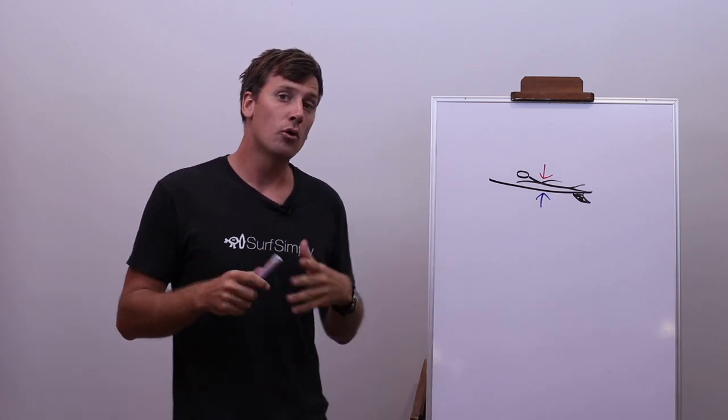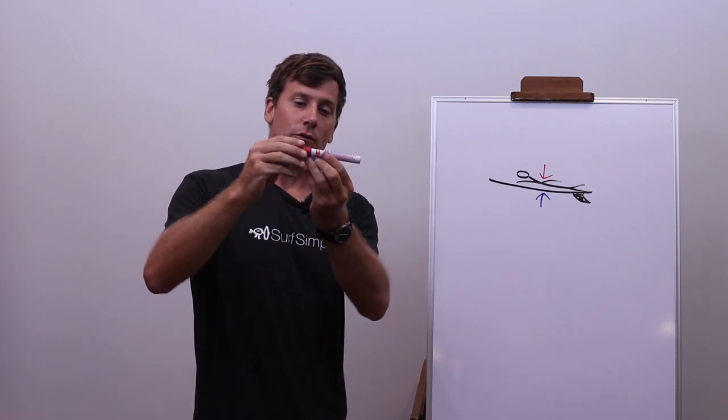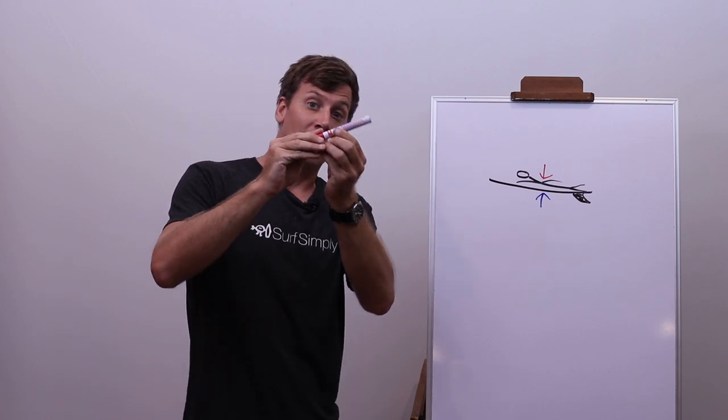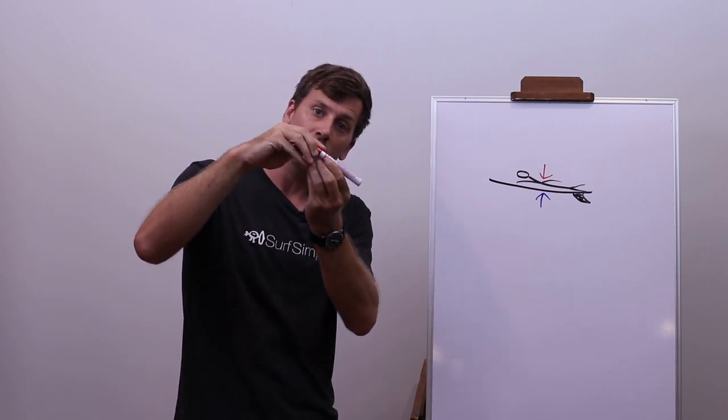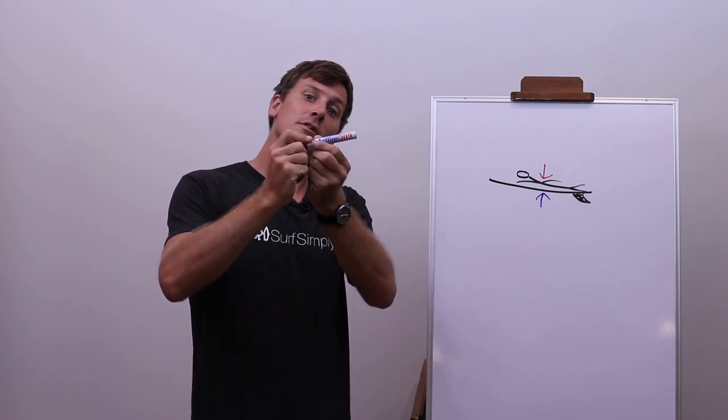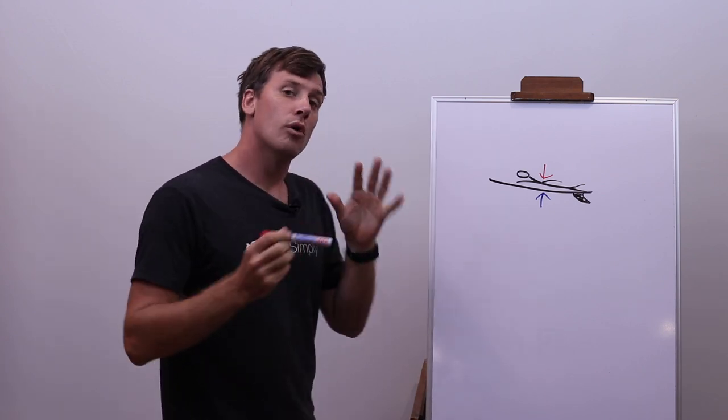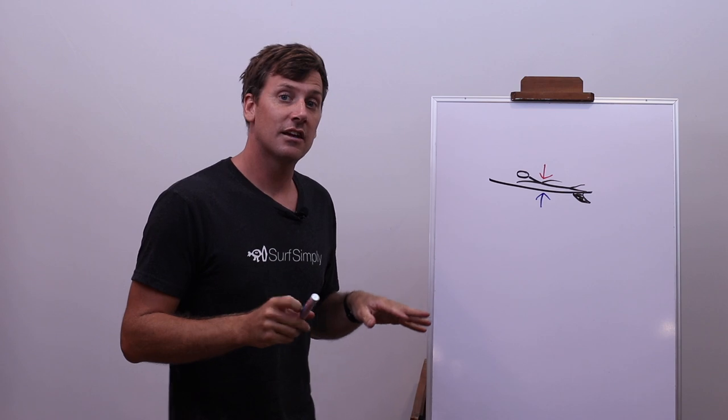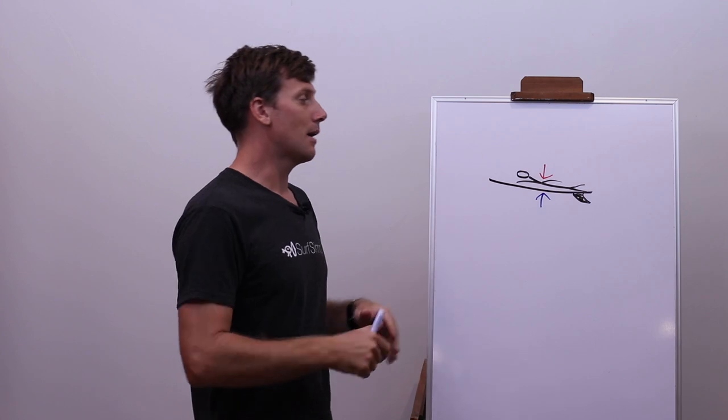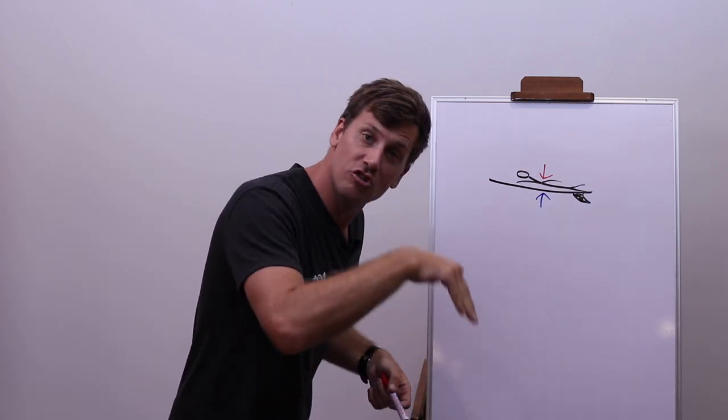By flattening the chest down to the deck and maybe kicking our heels up towards our bum, we can get the nose to dip downwards. You'll be surprised—even on quite a big board, if you're more than an inch out of position, you'll find you can only do one of those. We want to be able to do both.